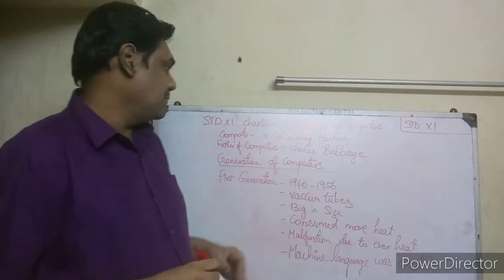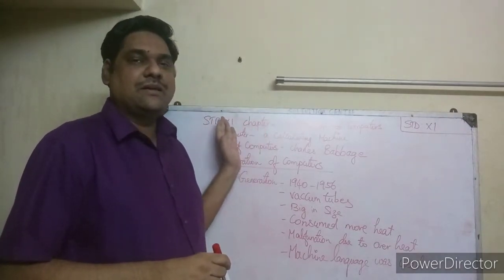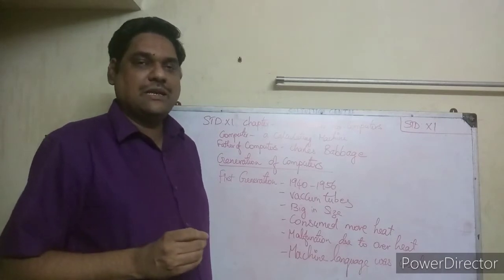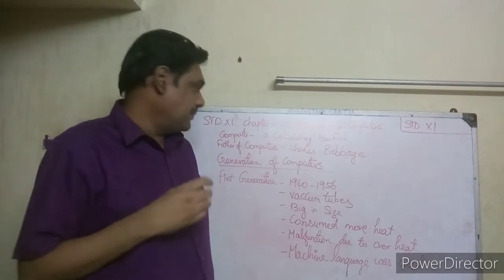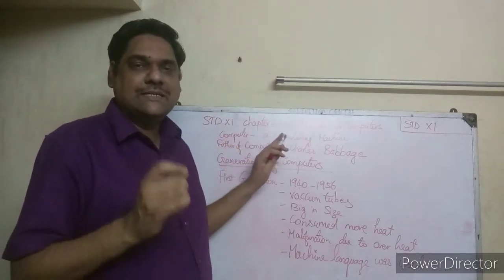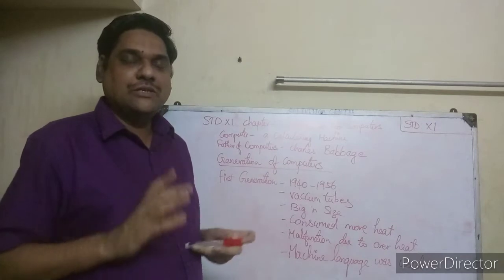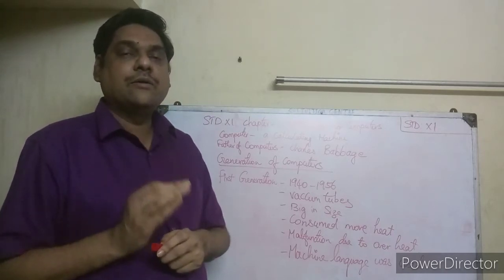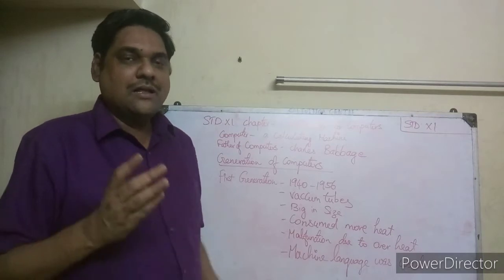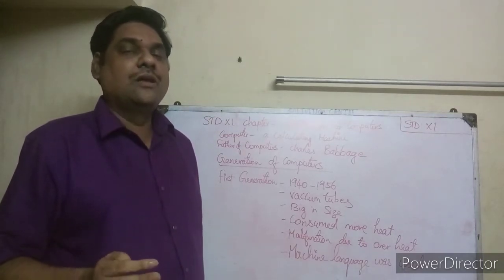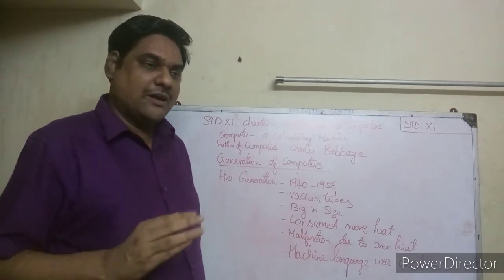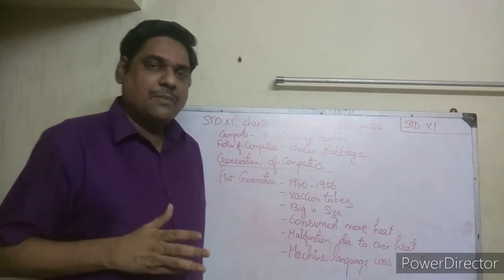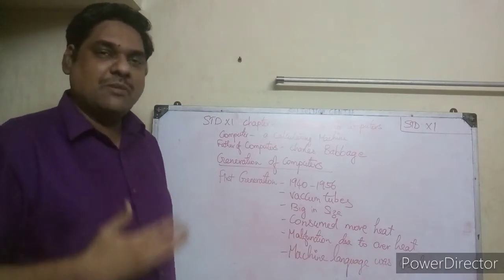Hello children, today we are going to see Chapter 1 of the Standard 11 textbook - that is Introduction to Computers. In the Plus One syllabus, the first chapter is Introduction to Computers. A computer is just a calculating machine - it can do calculations like addition, subtraction, multiplication, and division. That is why early computers were called calculating machines.